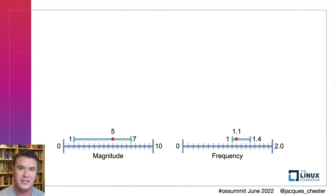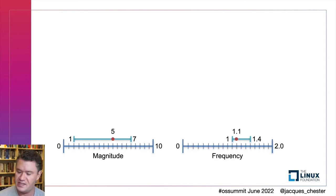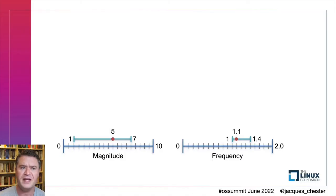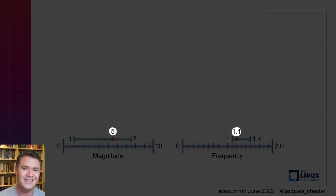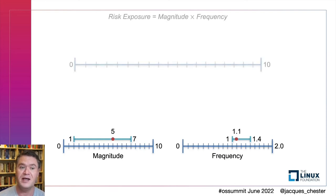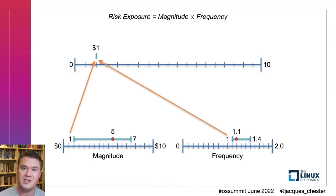Let's start with the decomposition of risk into magnitude and frequency, each occurring on a number line — magnitude in dollars and frequency in events per year. First we estimate plausible minimal values: for magnitude, say one dollar; for frequency, once per year. Then we estimate maximal plausible values: magnitude seven dollars, frequency 1.4 times per year. Finally we estimate the most likely values — the modes. Your first instinct might be to multiply each pair: minimum risk is $1 × 1 = $1; maximum risk is $7 × 1.4 = $9.80; modal risk is $5 × 1.1 = $5.50. But this is quite misleading because it assumes all values move in lockstep.